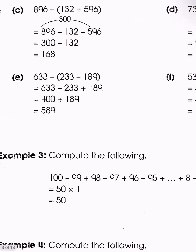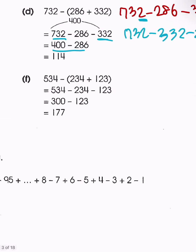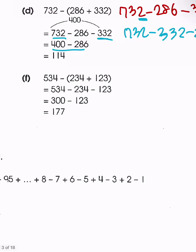Then distributing gives 633 minus 233 plus 189. Subtracting the two numbers ending in 3 gives 400, and 400 plus 189 gives 589. Then we have our last example: 534 minus 234 minus 123 after distribution. Doing the two numbers ending in 4 first gives 300, and 300 minus 123 gives 177.